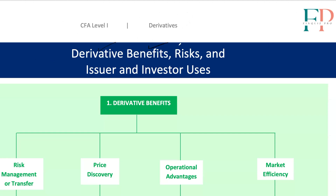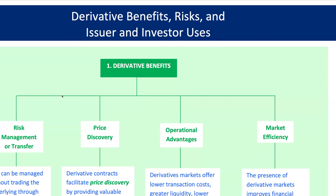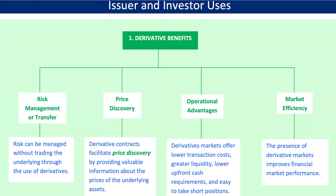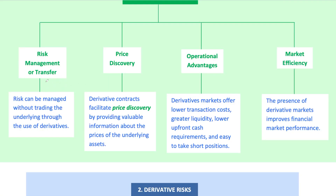Let's talk about derivatives — the good, the bad, and how issuers and investors actually use these financial tools in the real world. First up, the benefits of derivatives. Derivatives can be a powerful tool for risk management or transfer. They allow you to adjust your risk exposure without actually trading the underlying asset. Whether you want to increase, decrease, eliminate, or transfer risk, derivatives can get the job done.